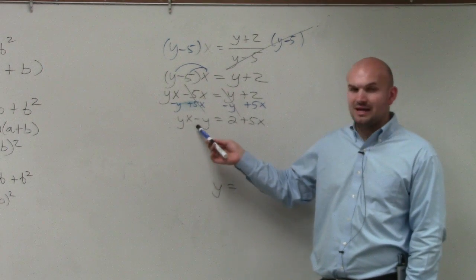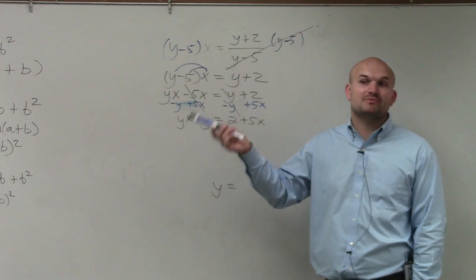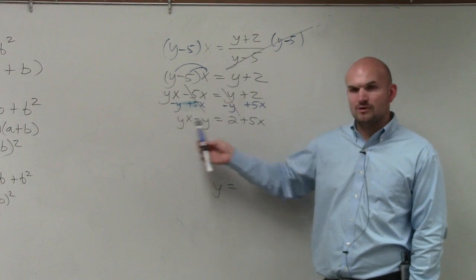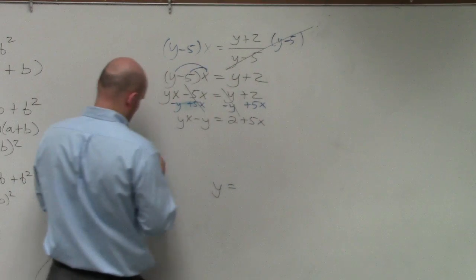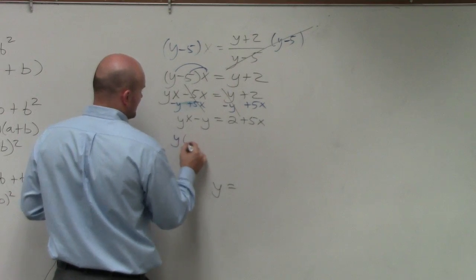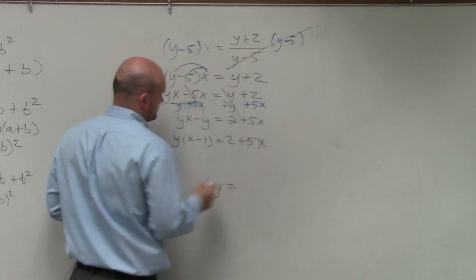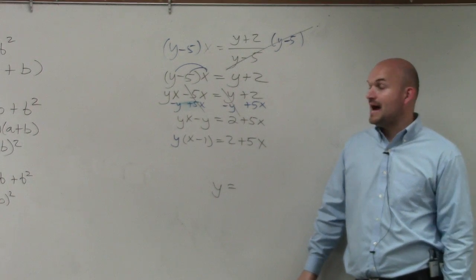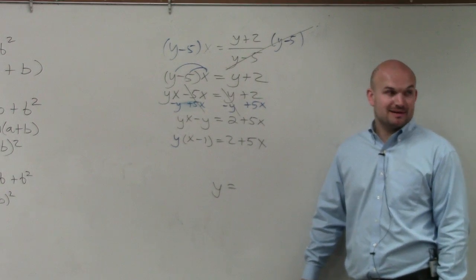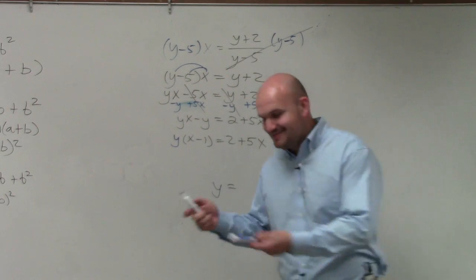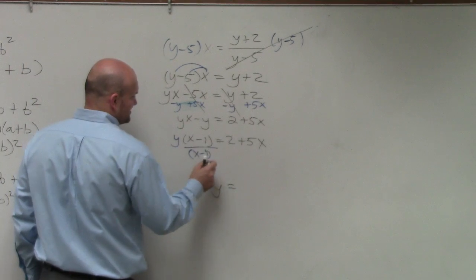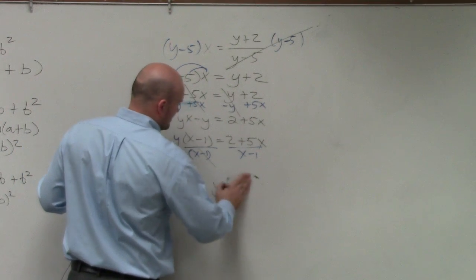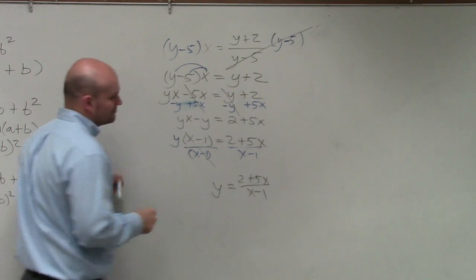A lot of times when we had more than one term, like in quadratic factoring, we couldn't combine them but we could factor. In this case, we can factor out the y. So if you factor out the y, you're now left with y times x minus 1. If I multiply the y back, I get yx minus y. To get y by itself, since y is being multiplied by x minus 1, we divide both sides by x minus 1. Therefore, the final answer is y equals 2 plus 5x divided by x minus 1. Done.